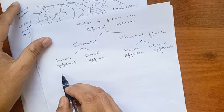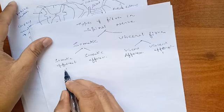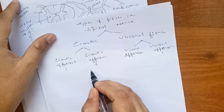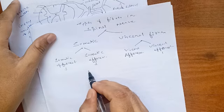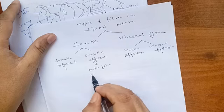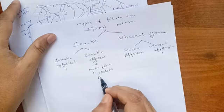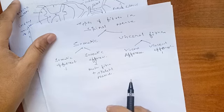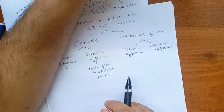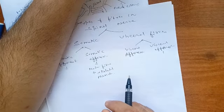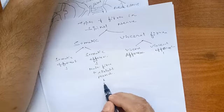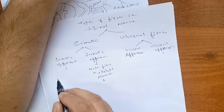The somatic efferent fibers transmit motor impulses to the skeletal muscles. They are myelinated fibers situated in the anterior gray column of the spinal cord. Stimulation of these neurons leads to contraction of the skeletal muscles.